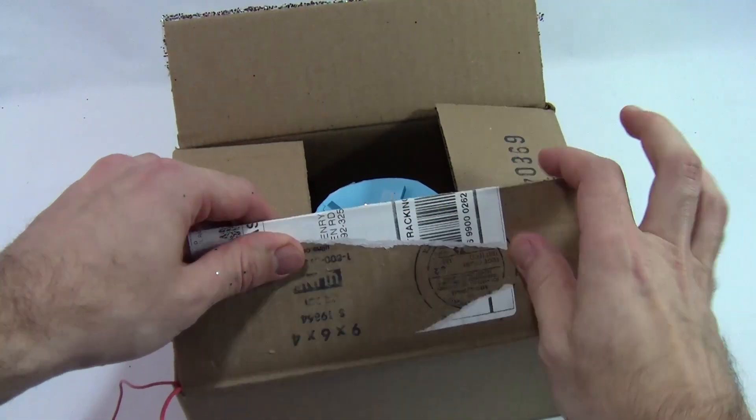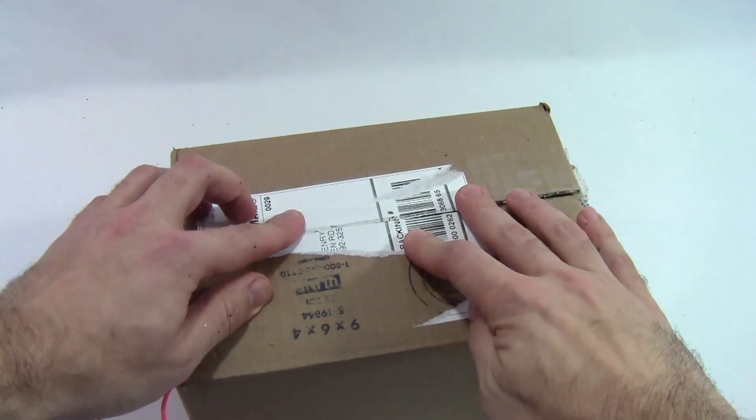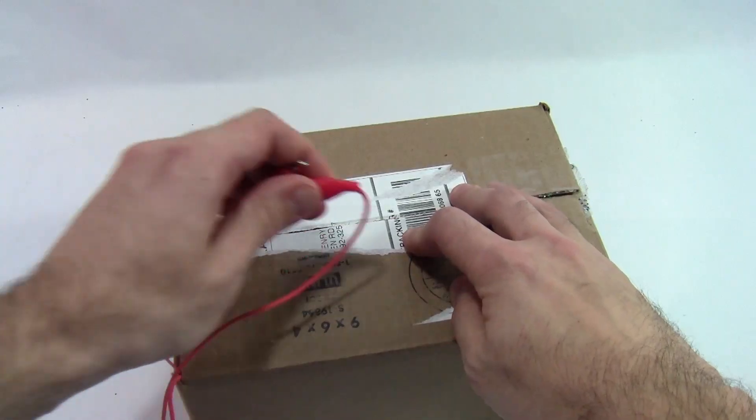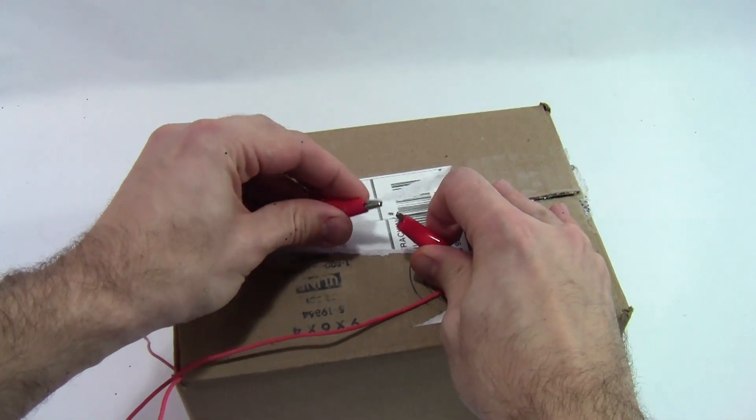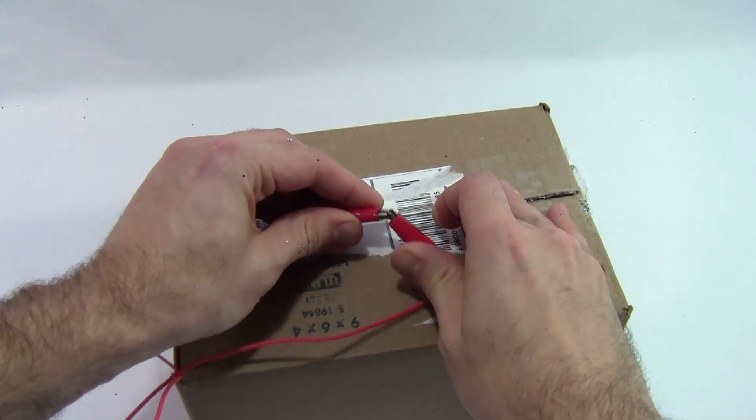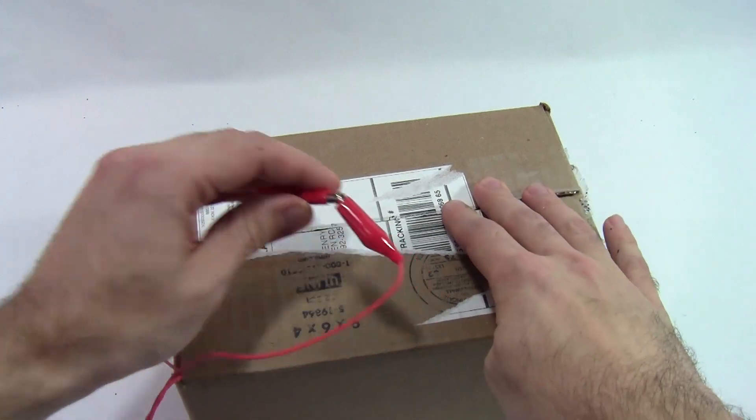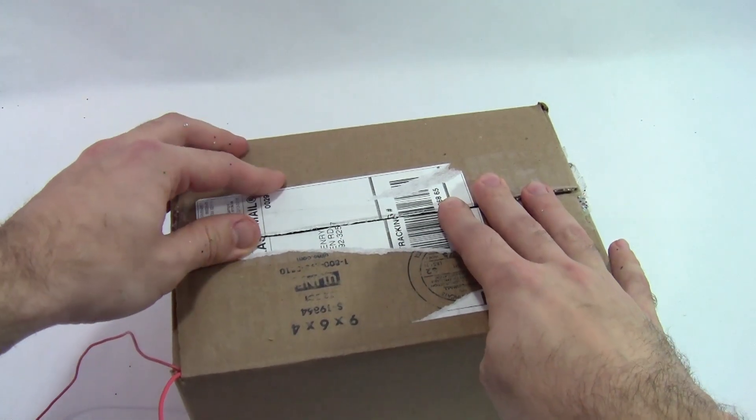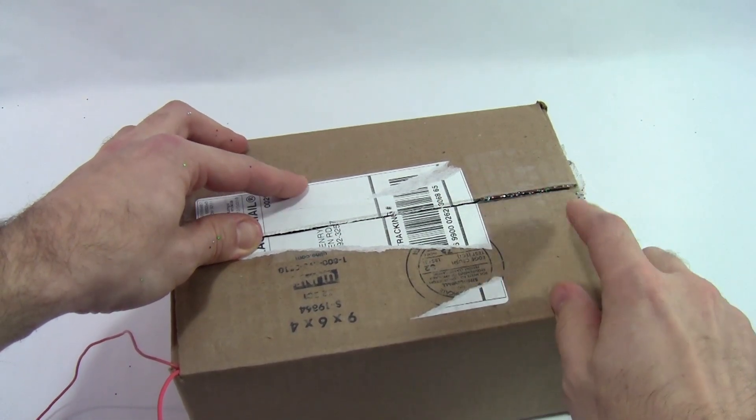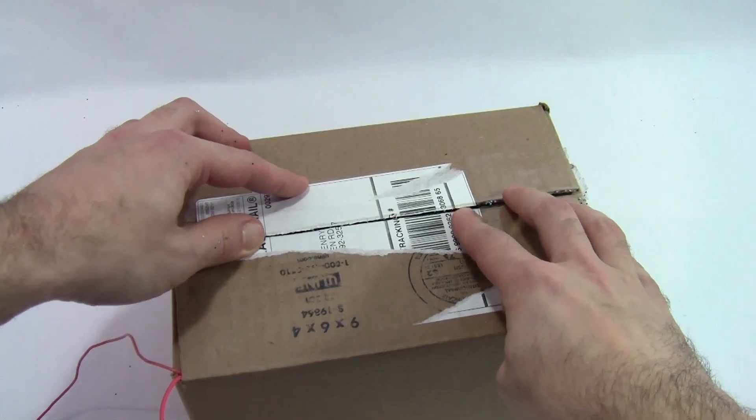Obviously you don't want to get glitter all over yourself if you can avoid it. So I'm going to close these flaps, close up the box, connect my two alligator clips externally. So now my circuit is completed inside the box, but the switch is being pressed down, which is preventing it from spinning. And when I open the box, ideally when I open this flap over on the right, the motor should start spinning.